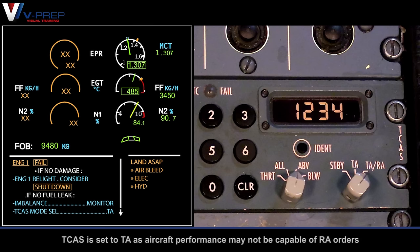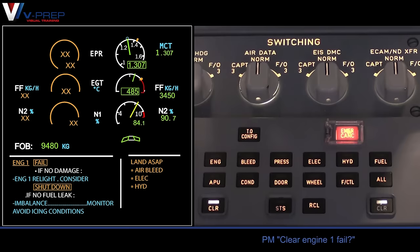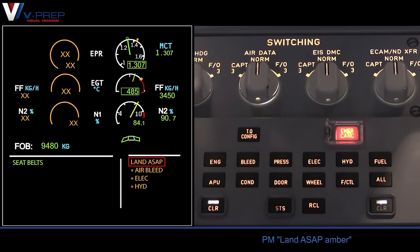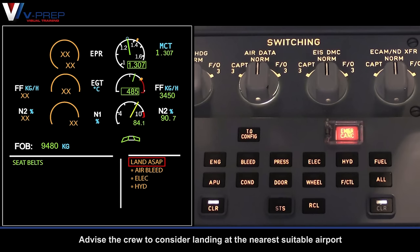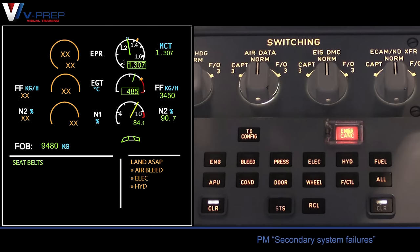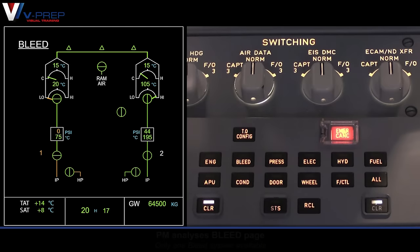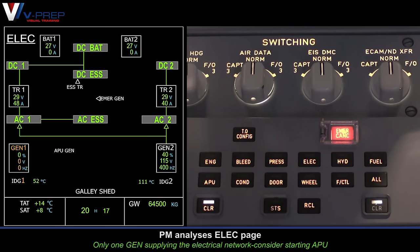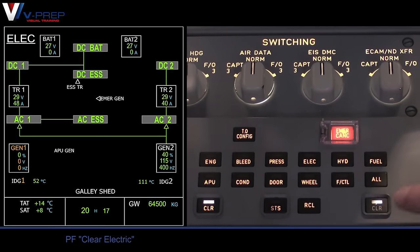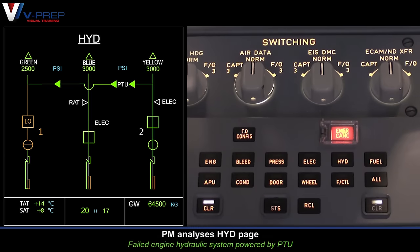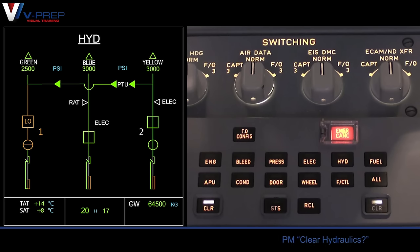Continue ECAM. Monitor fuel imbalance. TCAS is set to TA, as aircraft performance may not be capable of RA orders. Clear engine 1 fail. Land ASAP amber — advise the crew to consider landing at the nearest suitable airport. Secondary system failures and system pages: pilot monitoring analyses the bleed page, then the electric page, then the hydraulics page.